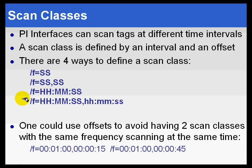The /F switch determines or identifies the scan class used by the interface. We define these sequentially, so the first /F is equivalent to scan class 1, the second /F switch is scan class 2, etc. The order of the /F switches is what determines which scan class number is used.